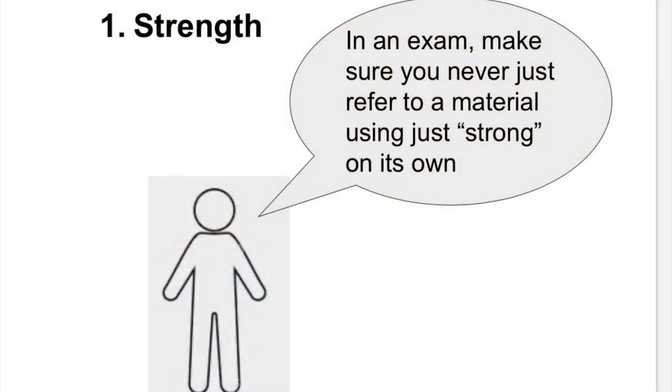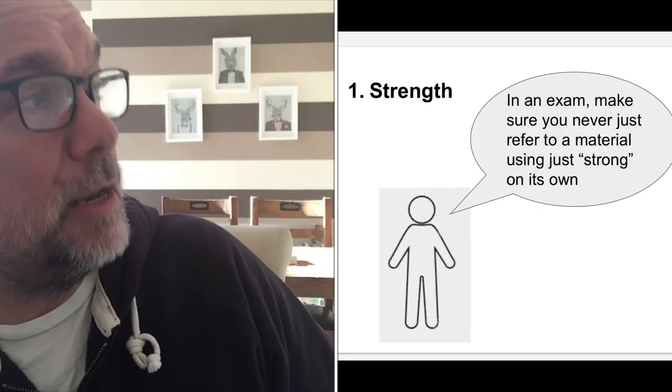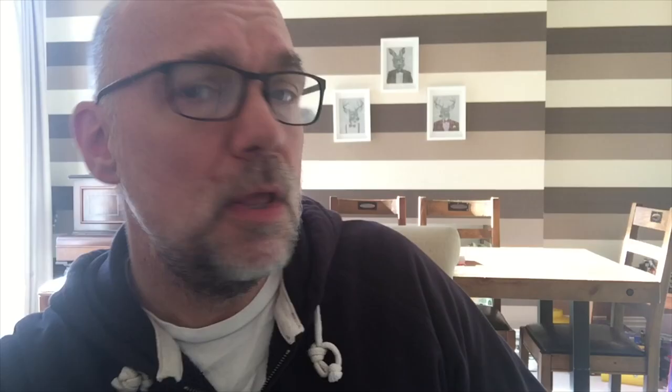Property number one is strength. In an exam, make sure you never just refer to a material using just the word 'strong' on its own. You can't just call a material strong — it's too general. You have to be more specific. For example, a dog's lead needs to be strong in tension so it can resist being pulled in opposite directions. The legs of a stool need to be strong in compression so they can resist the forces caused by somebody sitting on it.